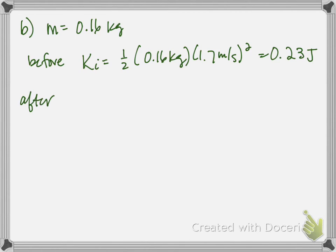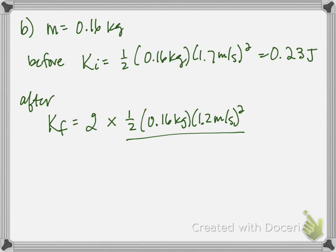Now in the after, let's do final kinetic energy. So we have the two balls are both moving at 1.2 meters per second. So I've got my 1/2, 0.16 kilograms times 1.2 meters per second quantity squared, but I've got two balls that are doing that, so I've got a times 2 out here in front. So each ball has a mass of 160 grams, is moving at 1.2 meters per second, and there are two of those balls.